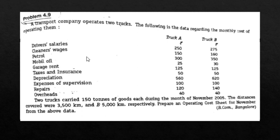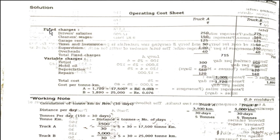They have given us the expenses and asked us to prepare the cost sheet for the month of November. Two trucks carried 150 tons of goods each during the month of November. We need to categorize the cost sheet into fixed charges and variable charges. Before calculating those, we have a working note.